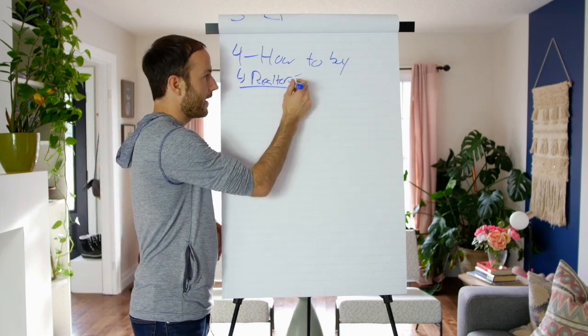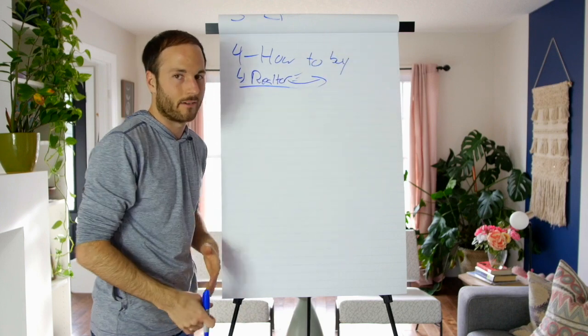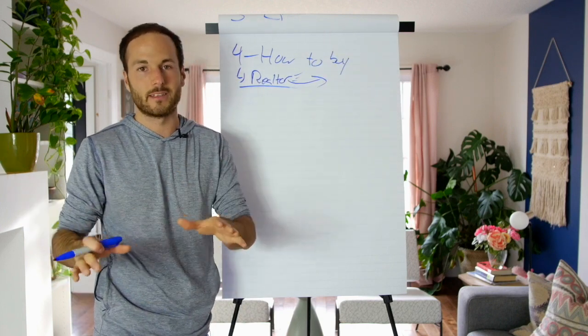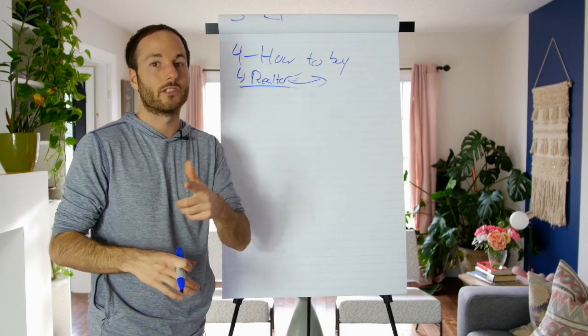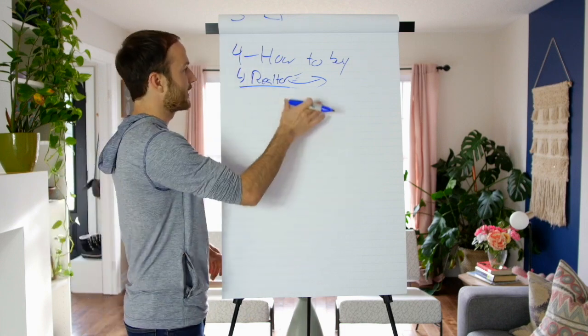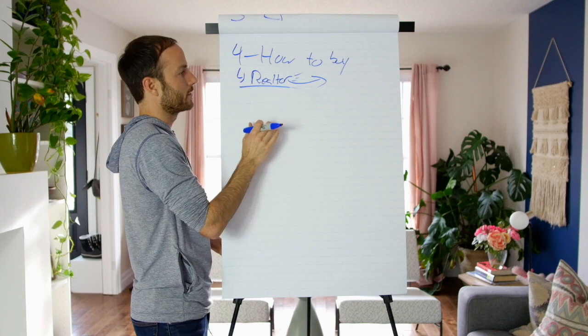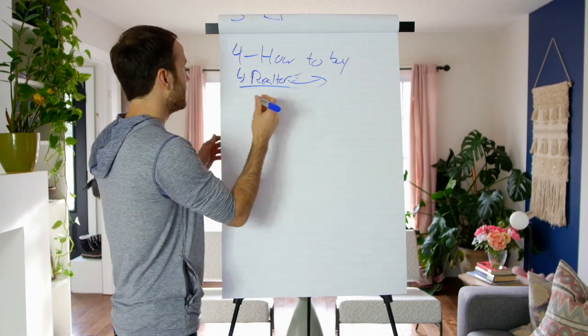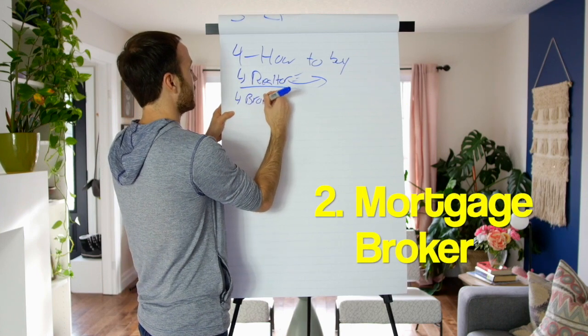So Mr. Realtor, Mrs. Realtor, this is what I want. I want multifamily properties, triplexes in this specific area. I want it to look like this. They must cash flow this amount. And then you let them find you the properties while you do other stuff, which I'll talk about in a sec. You build your business, you find money, you go to events and networking events. That's your job as a real estate investor. Let the backend people, your team members, find you the deals and help you out and help you scale. The second person you're going to need is a mortgage broker.